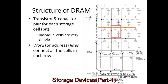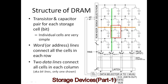We have a row of these components connected together along a word or address line that connects all cells in each row. There are also two data lines connecting all the cells in each column. By setting a value to activate a particular address line and a particular column, you can address an individual memory cell — an individual bit of memory. Each of these cells stores a single zero or one value, and if we know the address line and column, we can refer to that one cell.